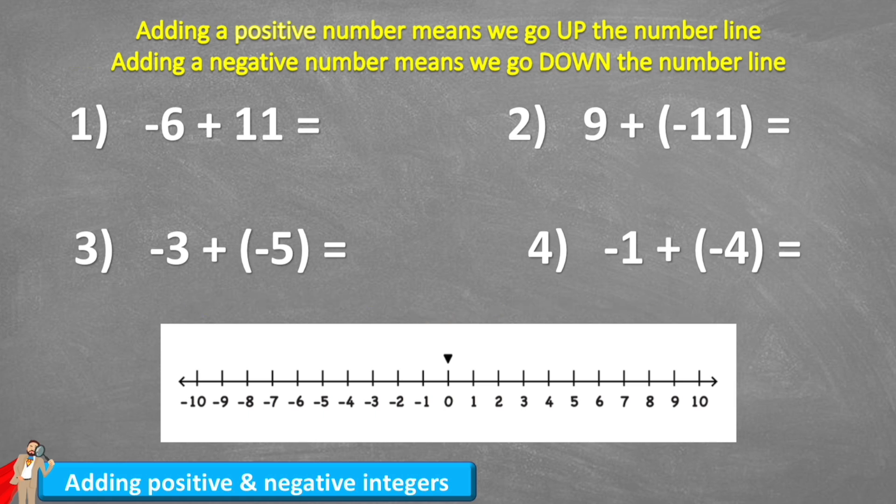So let's have a look at what that looks like with example one. So example one says negative six plus 11. So the first thing we're going to do is we're going to mark negative six on our number line. And I can see it just here. So that's going to be our starting position. And now I'm adding a positive 11. So if I have negative six and I add a positive to it, I'm going to end up coming up my number line. So let's do it.